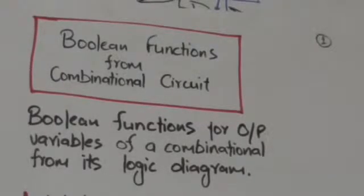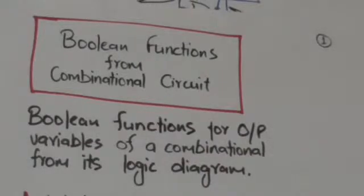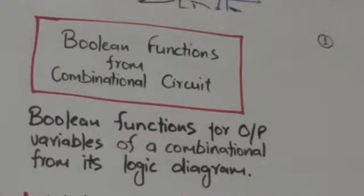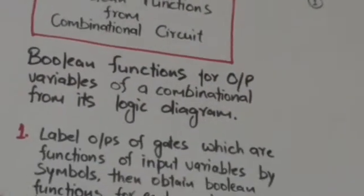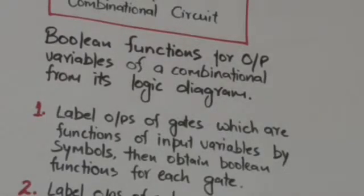Hello friends, welcome back. In this tutorial we will learn how we can obtain boolean functions for output variables of a combinational circuit from its logic diagram. The first step is to label the outputs of gates which are functions of input variables by symbols.